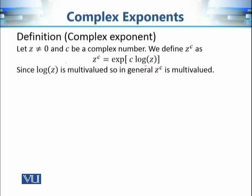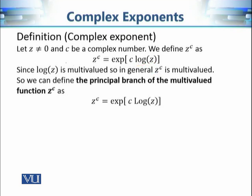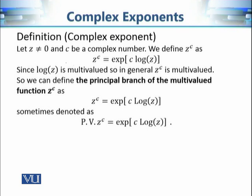Since the definition of the complex exponent involves log, which is a multivalued function, z raised to power c is in general a multivalued function. We can define the principal branch of this multivalued function by taking the principal value of the logarithm, sometimes denoted as P.V. z raised to power c, which gives the principal value of the complex exponent.